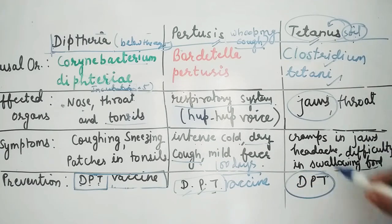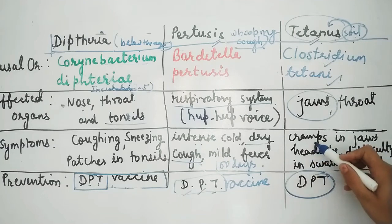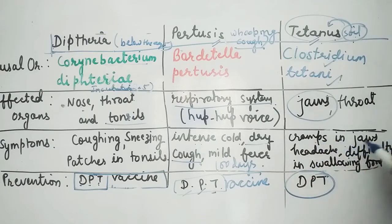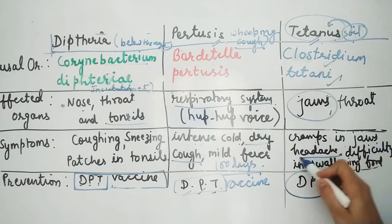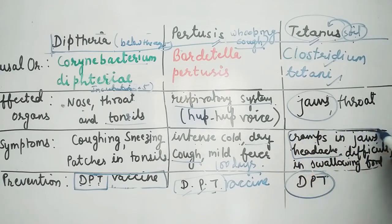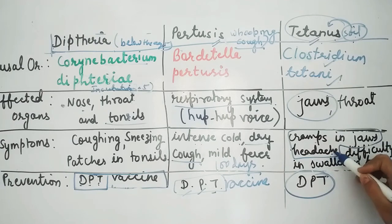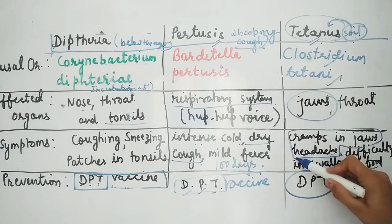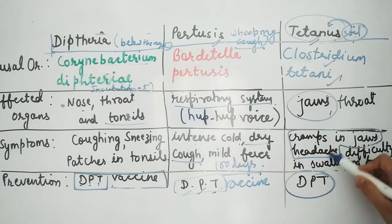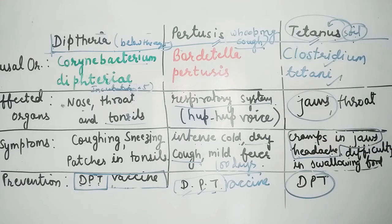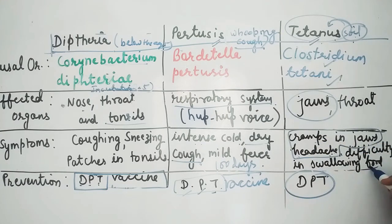The DPT vaccine prevents tetanus. Symptoms include cramps in the jaws and headache initially. This disease is characterized by headache, cramps in the jaws, difficulty in breathing, and difficulty in swallowing food.